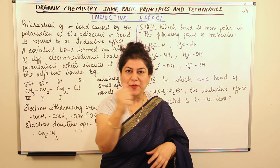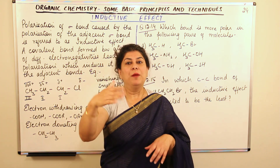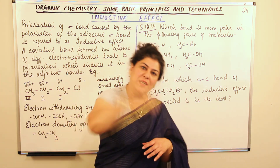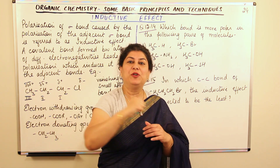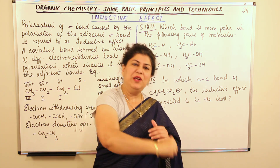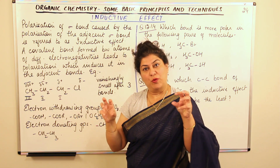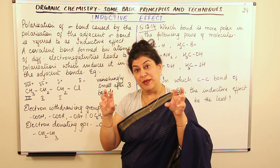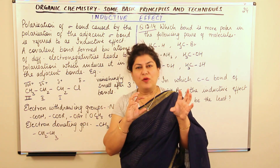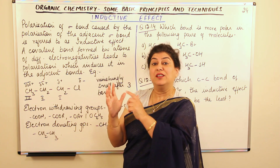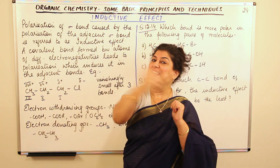Think of an arm wrestling match. If both opponents have equal strengths, they struggle in the middle. But if one opponent is really weak, it's a slam dunk — it just goes down. That's because the stronger person has far more energy to pull. So when two different elements in a covalent bond have a great electronegativity difference, a great imbalance is created.